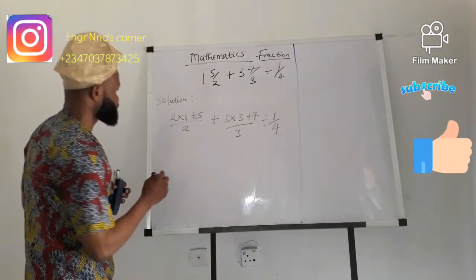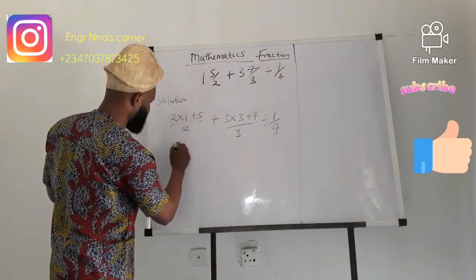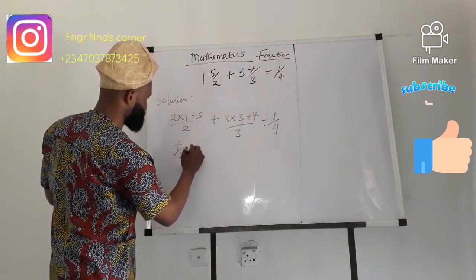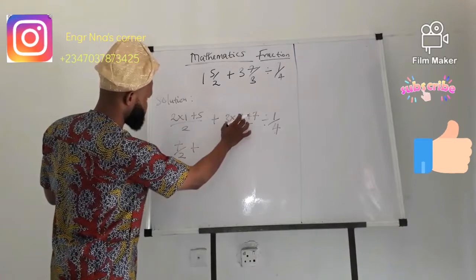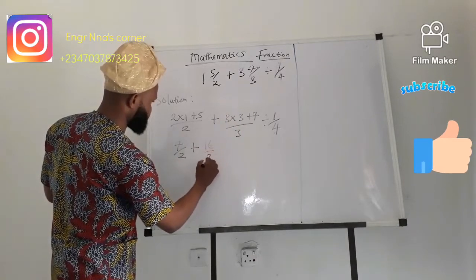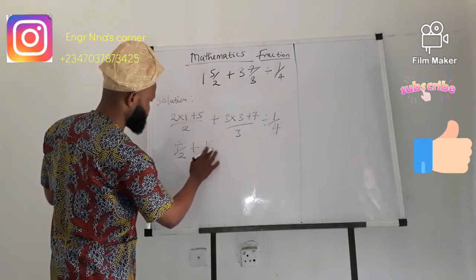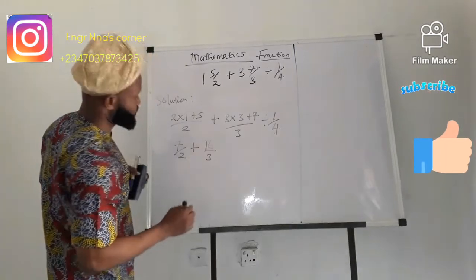So we say this is 7 over 2 plus 16 over 3.